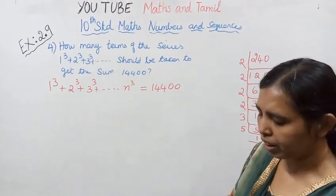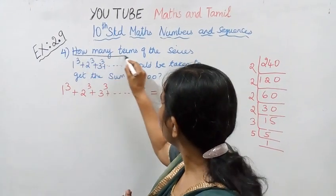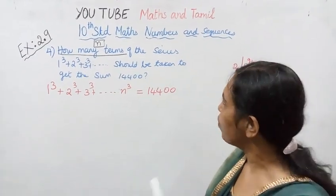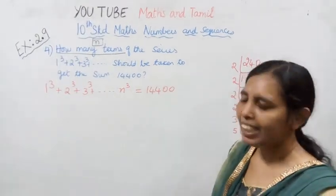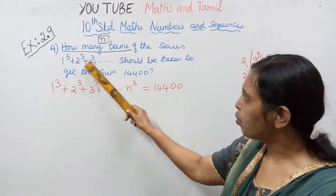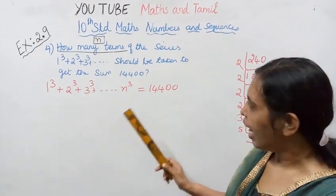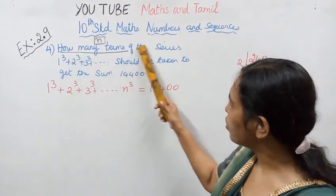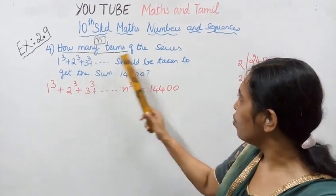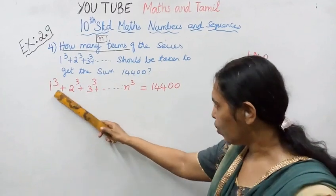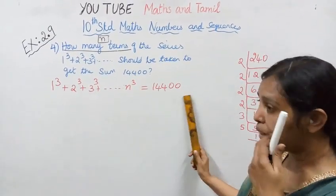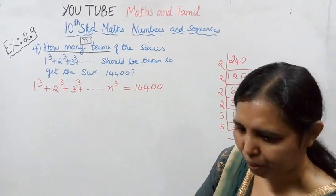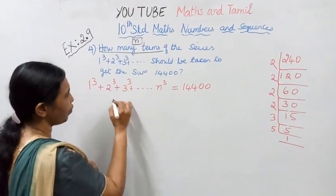How many terms? We need to find n. The question is asking how many terms of the series 1³+2³+3³ should be taken to get the sum. We need to find n. For 1³+2³+3³...+n³, we have a formula.